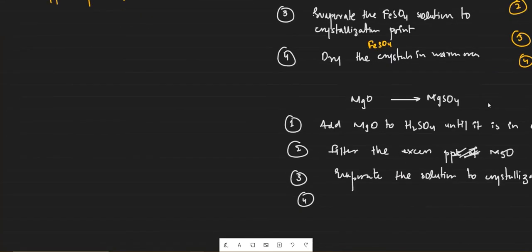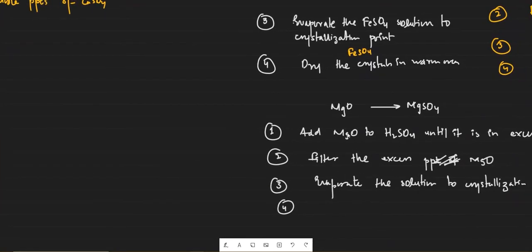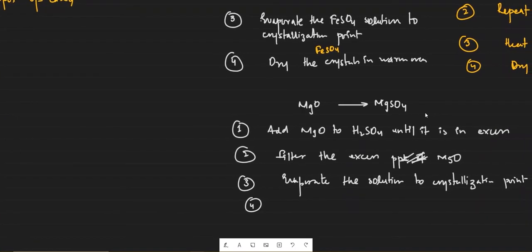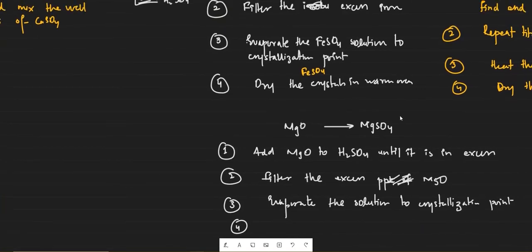Another example: to prepare magnesium sulfate from magnesium oxide (an insoluble starting material), use the excess method. Add MgO to H2SO4 until it is in excess. Filter the excess MgO. Evaporate the magnesium sulfate solution to crystallization point. Dry the crystals in a warm oven or between the folds of filter paper.